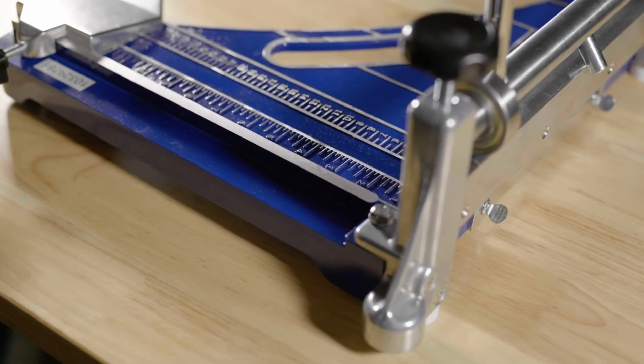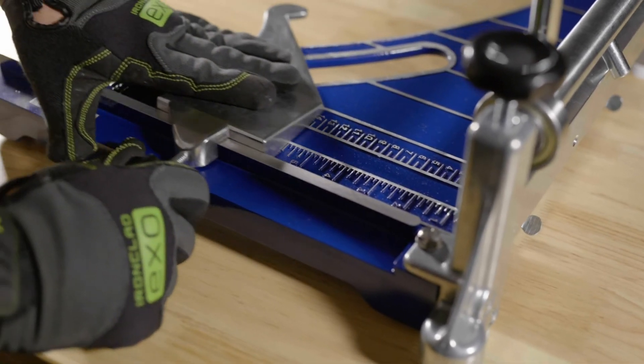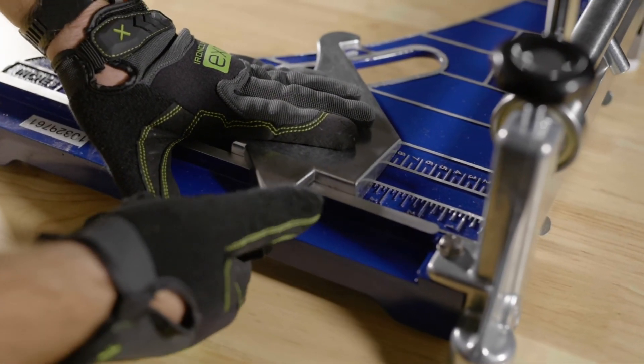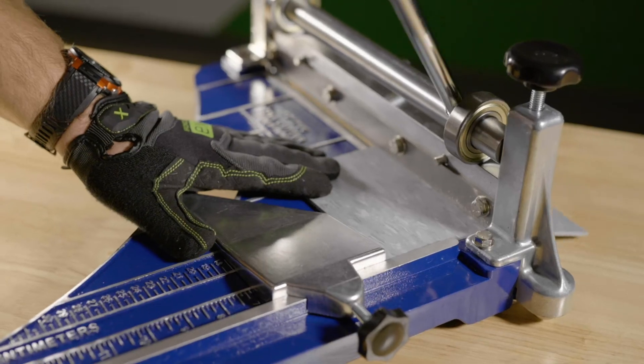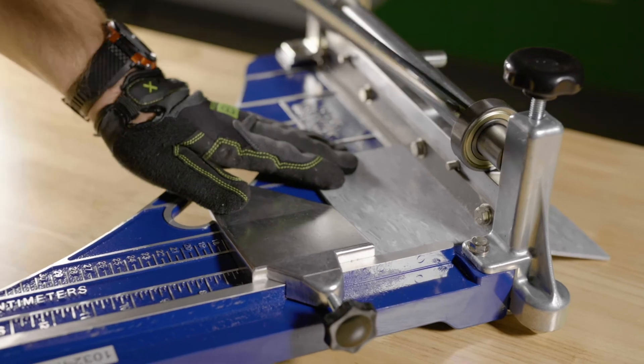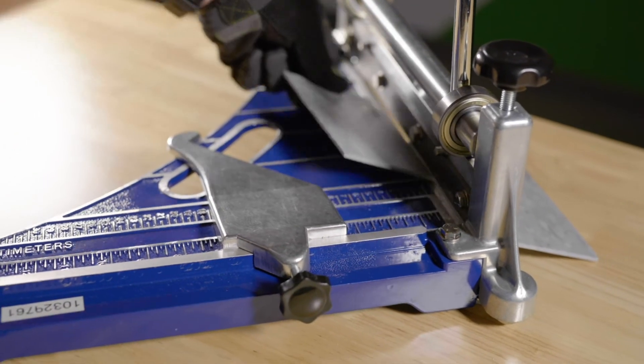The forward edge of the miter guide can also be used as a stop gauge to ensure repeated cuts are all the same without measuring for each one. Measure carefully for the first cut or use a cut tile as a template to set the stop.